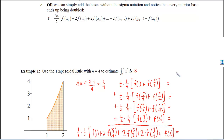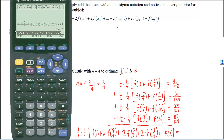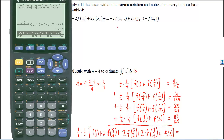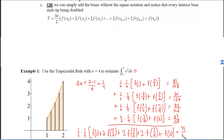Pulling out our calculators, I entered x squared for y1 and on the home screen entered one half times one fourth times y1 of 1 plus 2·y1 of 5 fourths plus 2·y1 of 3 halves plus 2·y1 of 7 fourths plus y1 of 2, and got 75 thirty-seconds. If you have a calculator and the delta x values are the same for every subinterval, it might be quicker to just type that combined form in.